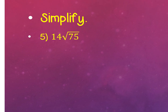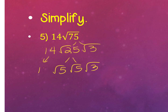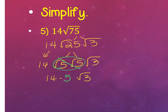For the next example, there's already a 14 outside with a 75 inside. For the factor tree, you can do 25 times 3 or 5 times 15. If you do 25 and 3, recognize 25 is a perfect square. Breaking it down: 5 times 5 gives a pair of 5s — the 5 comes out and multiplies to the 14 already outside. The square root of 3 stays underneath. 14 times 5 gives 70 square root of 3.